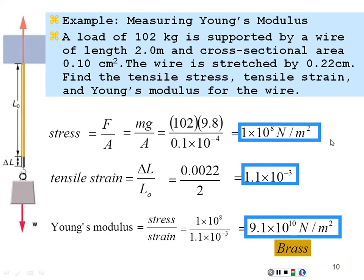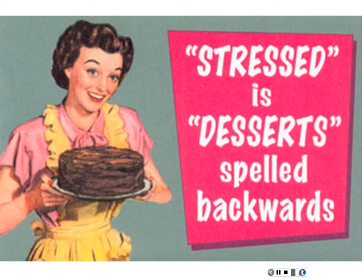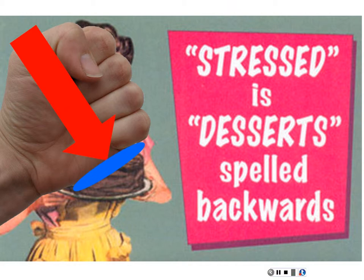That's a nice introduction to elastic modulus, and that's pretty much my lecture. One last thing worth showing: if you're truly stressed, you should know that the word 'stressed' is 'desserts' spelled backwards. So if you think of desserts, you can kind of reverse your stress. Here we have a cross-sectional area with a force — force per area is stress. That concludes this second lecture of Chapter 12, dealing with elastic modulus.